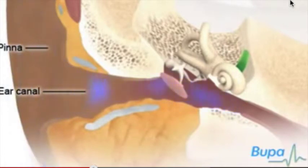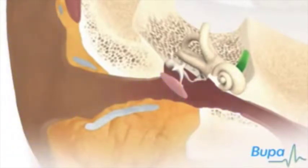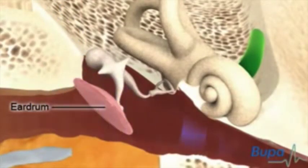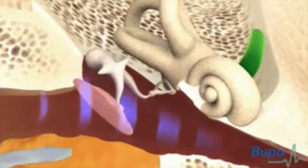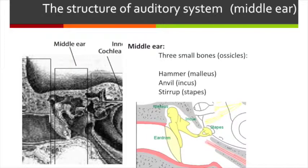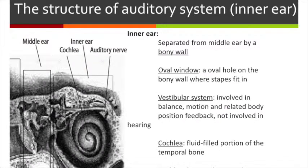In general, when sound waves come, the pinna will collect them, then they will funnel down to the eardrum through the ear canal. The eardrum transfers the sound waves into vibration and transmits it to the inner ear through three small bones in the middle ear: the hammer, anvil, and stirrup. In the inner ear, vibration travels through the fluid in the cochlea and vibrates the hair cells. The hair cells transfer it into electrical signals and send them to the brain.